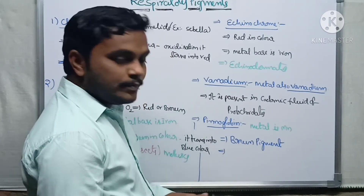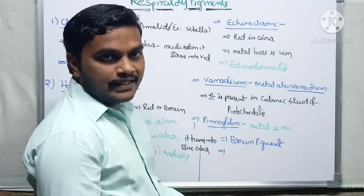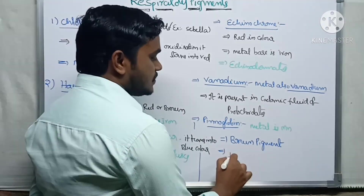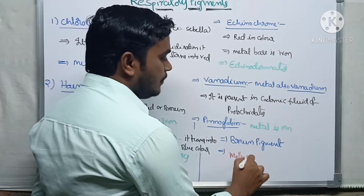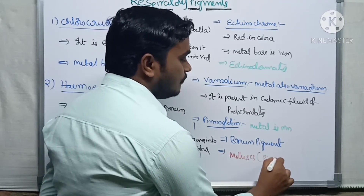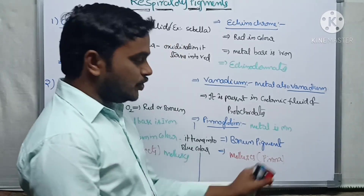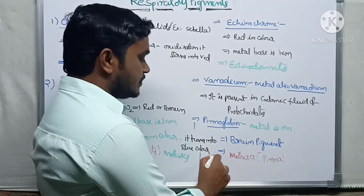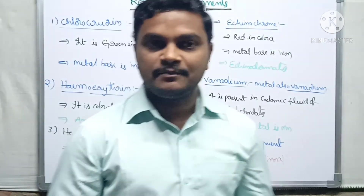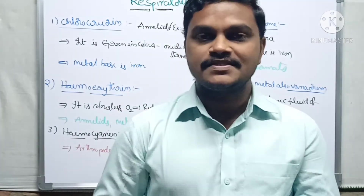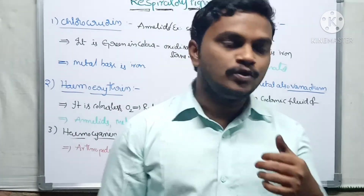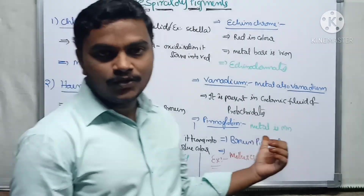The example for pinnaglobin is molluscs, specifically the organism Pinna, from which its name comes. These are the respiratory pigments which are helpful for the exchange of gases within different organisms, starting with hemoglobin and ending with pinnaglobin.